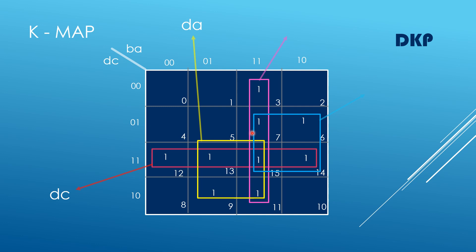The next group can be read as DA. This group represents two columns 0111 and two rows 1110. In the columns, the first bit changes from 0 to 1 — omit that. The second bit is constant, corresponding to variable A, so write A. For the rows, 1 changes to 0 — omit that. The first bit is constant and represents D. Therefore the product term is DA.